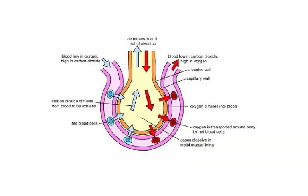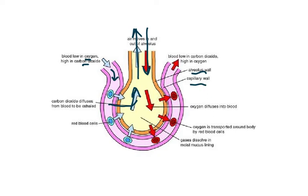Now we need to understand the gas exchange which takes place at the surface of the alveoli. When we inhale and exhale, air moves into the alveoli and is refreshed at all times. When blood flowing low in oxygen and high in carbon dioxide enters via capillary networks closely surrounding the alveoli, there is a short diffusion distance. Carbon dioxide diffuses from the blood into the alveolar air and is exhaled out. The gases dissolve in the moist mucus lining first, and oxygen is transported around the body by the red blood cells. Blood leaving is now low in carbon dioxide but high in oxygen.